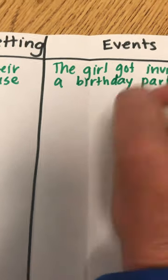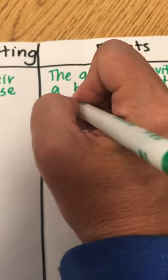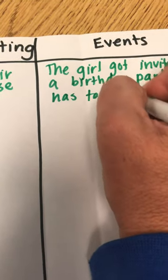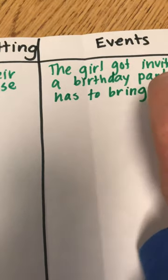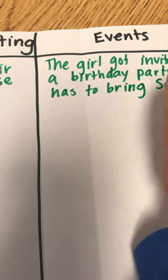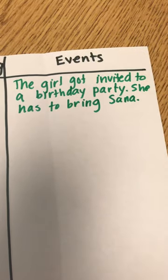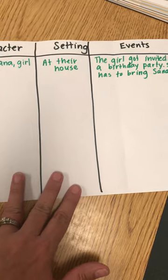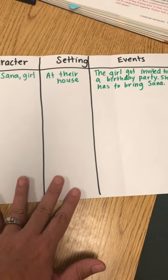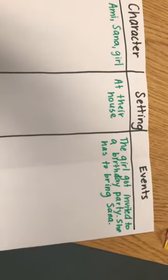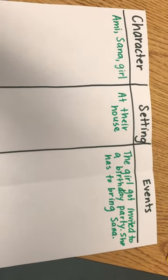She has to bring who? Sana, her sister. Good job. She has to bring Sana — they told us her name. Make sure that you have all that on your paper. I think maybe if I turn it this way it's easier. Go ahead and get all that on your paper.